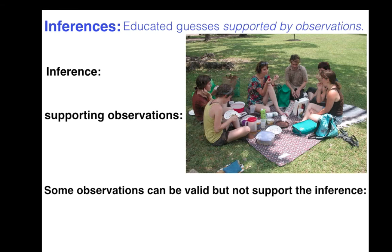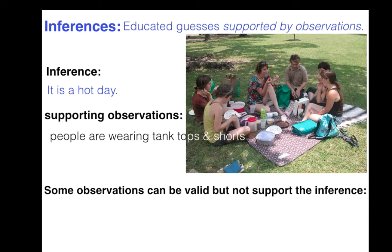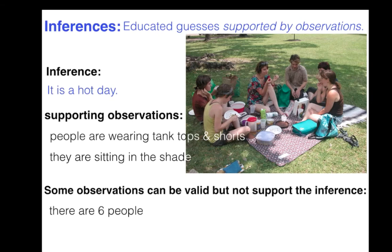Now we're going to talk about inferences, which are educated guesses supported by observations. You have to have observations backing up any inferences or guesses that you make. We have a scene with people at a picnic and we could make the inference that it's a hot day. People are wearing tank tops and shorts, and most of them are sitting in the shade — you wouldn't sit in the shade when it's cold. Those are good supporting observations that imply it is a hot day.